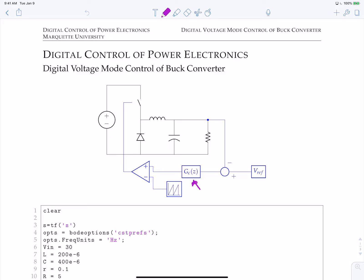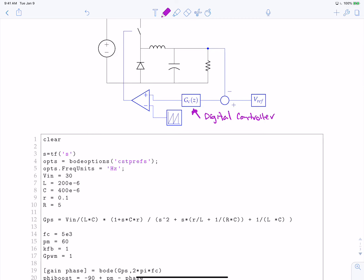So essentially what we're going to do is instead of having a continuous time controller, now this is going to be our digital controller. We're going to pick up where we left off last section. So we're going to have this footprint of MATLAB script from the last section. Just kind of briefly review - these are the settings and definitions for the converter.